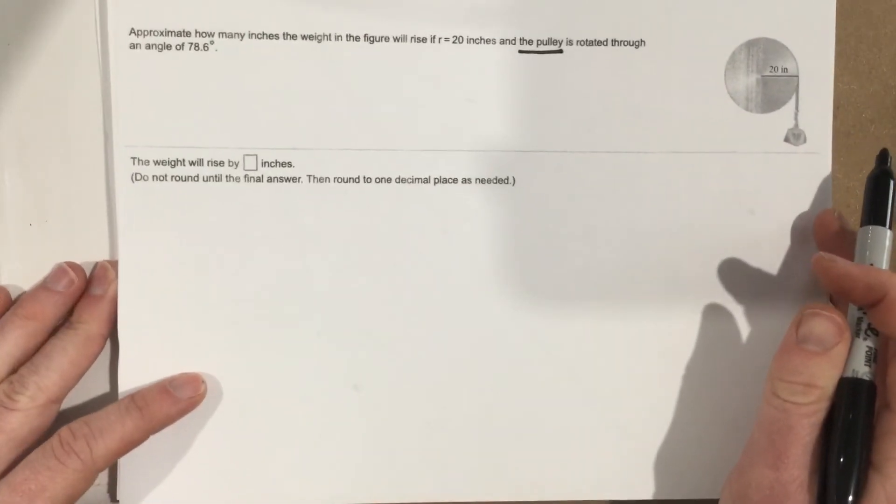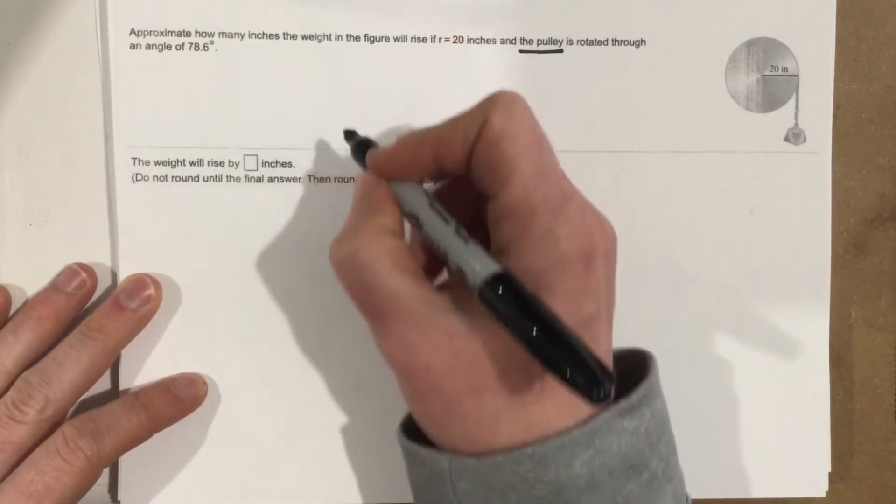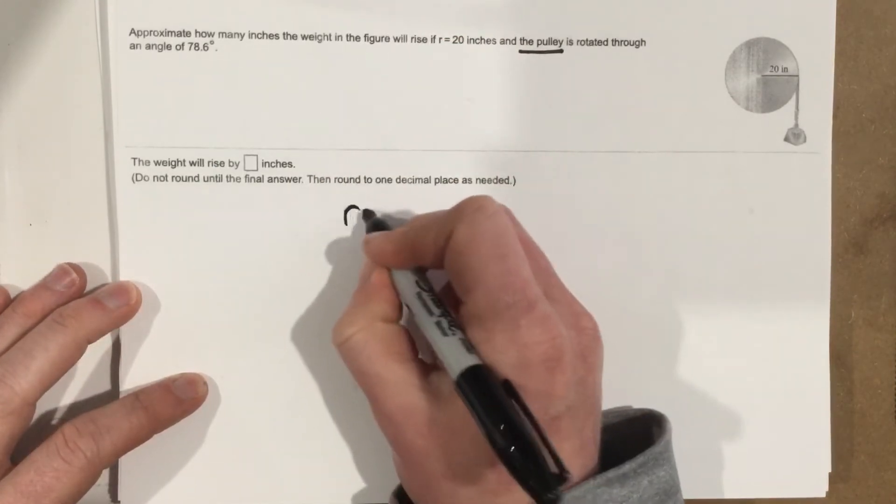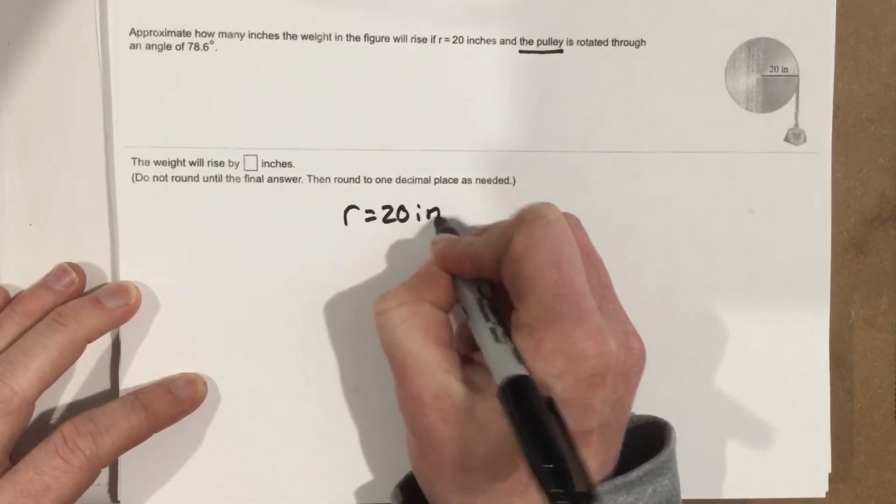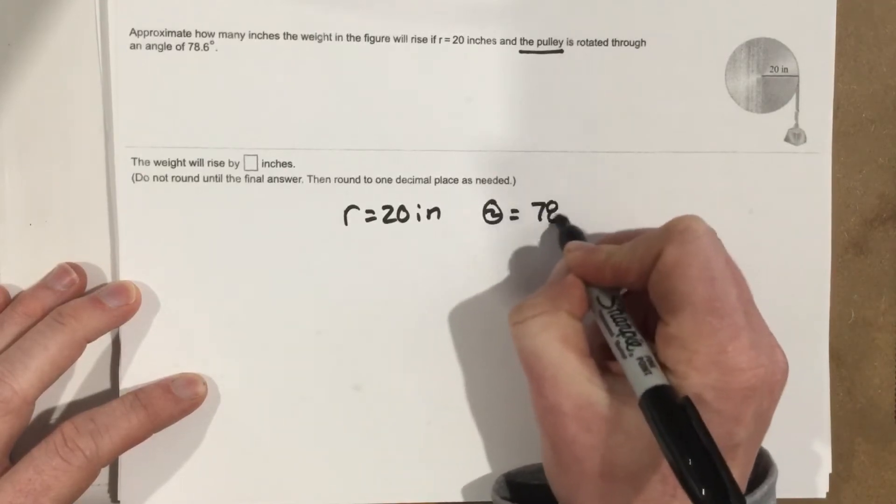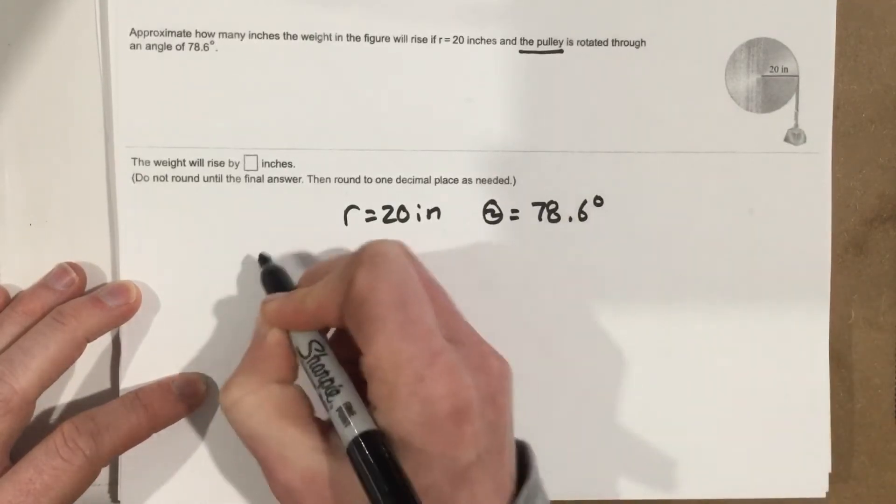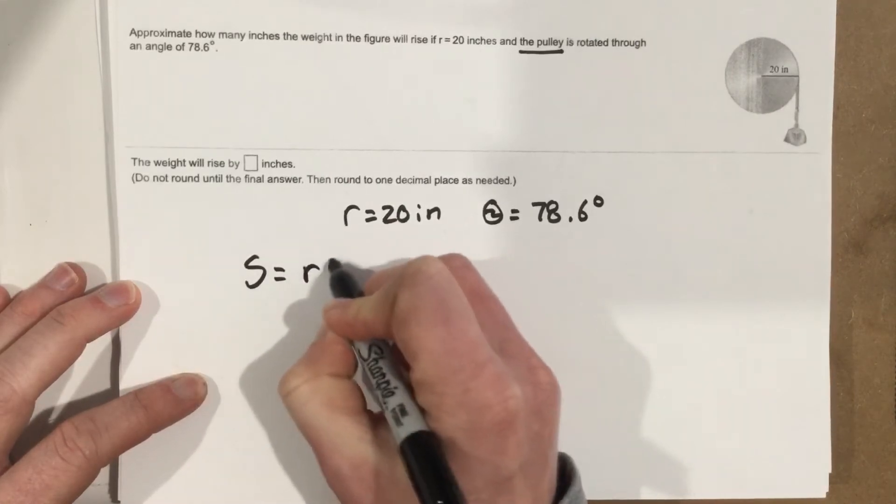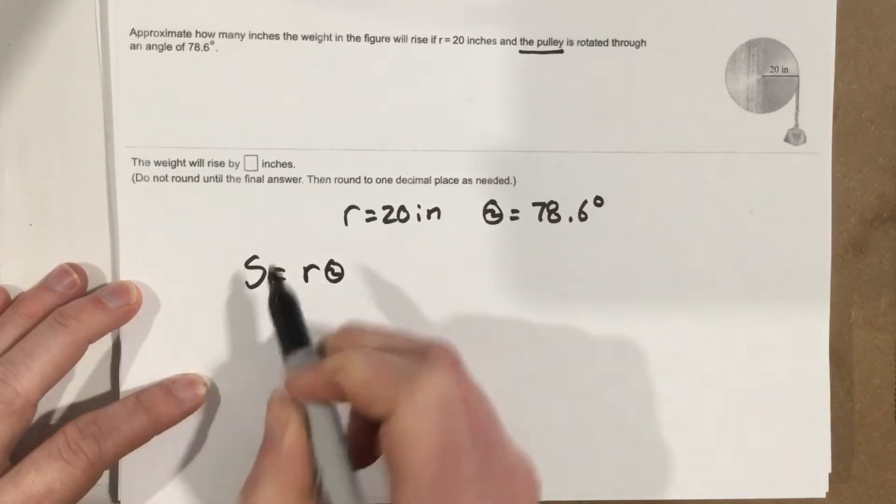So we can come back and we can say, alright, we know we're going to use r equals 20, we know we're going to use theta equals 78.6 degrees, and we know we're going to use s equals r theta to solve this because we want the arc length.